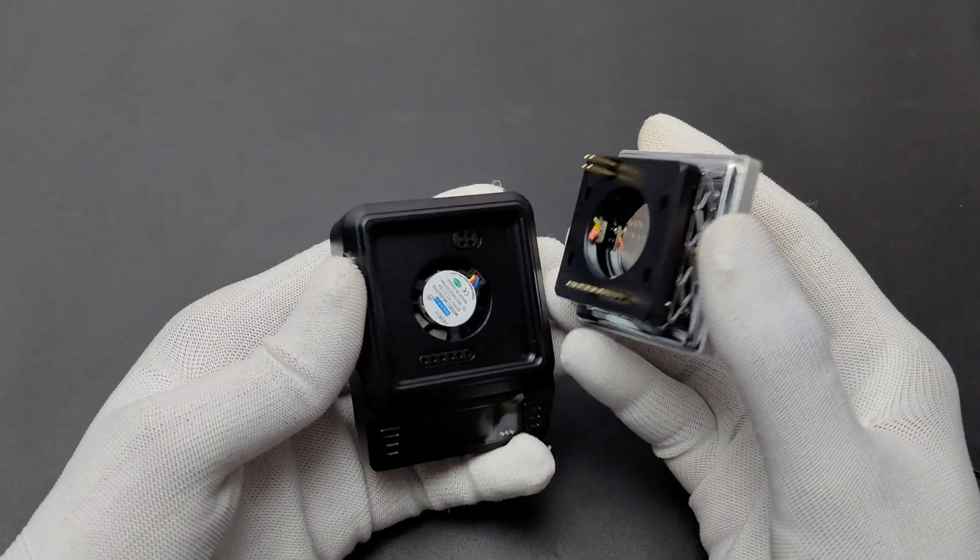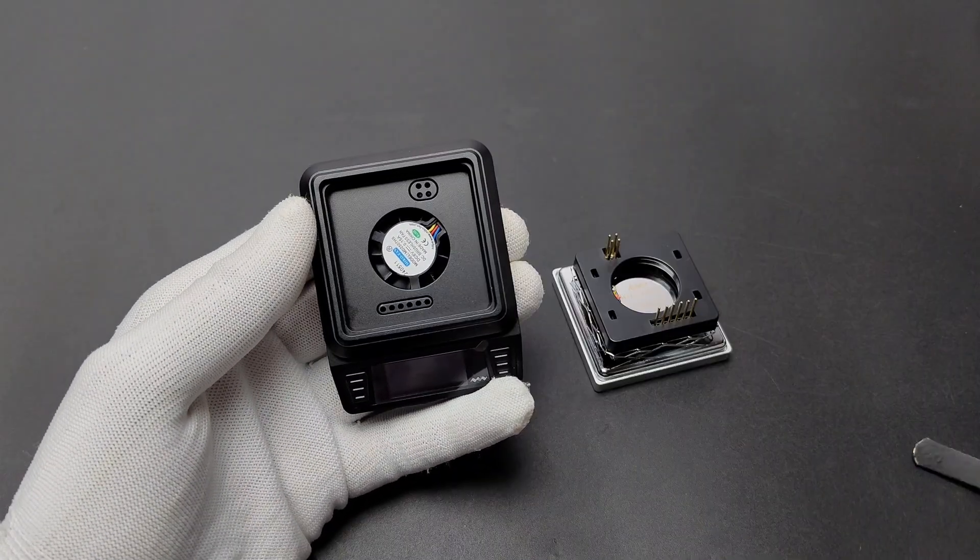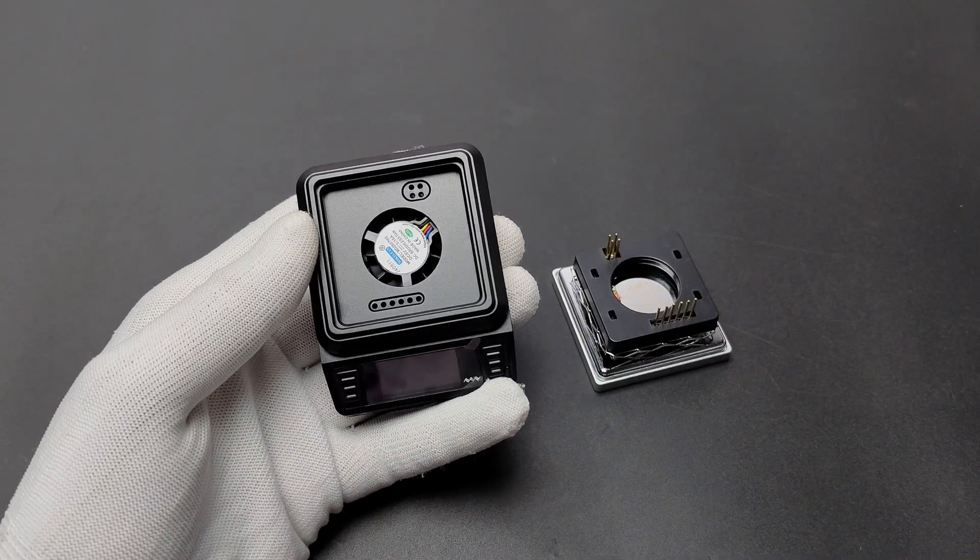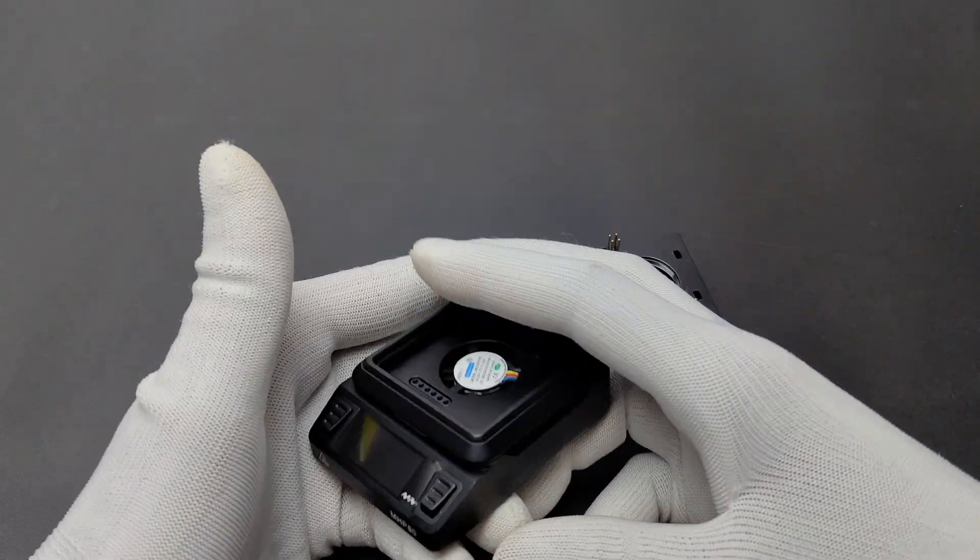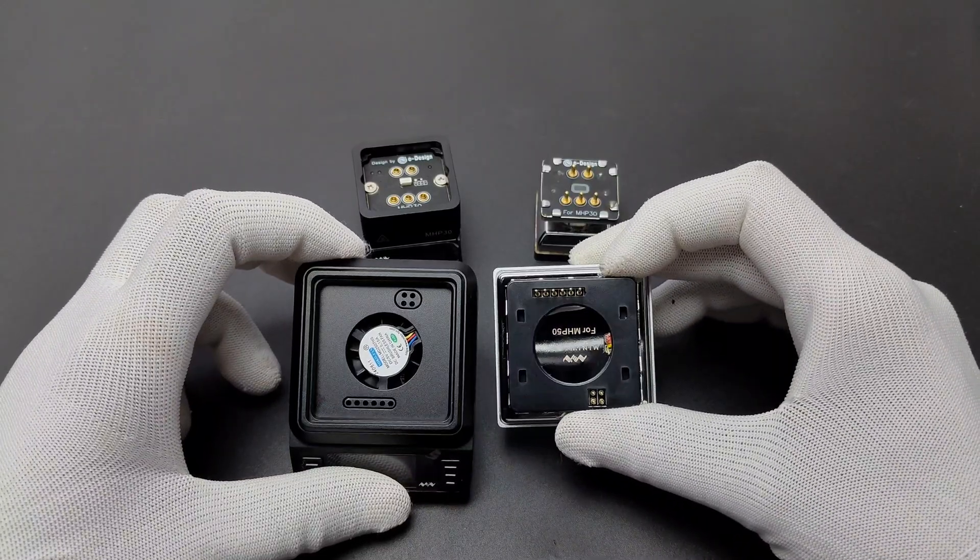We can separate the controller and heating plate just like the MHP30. Now you can see a fan is in the controller. This built-in high-speed cooling fan automatically detects the temperature of the controller and intelligently adjusts the fan speed and accelerates the heat dissipation.